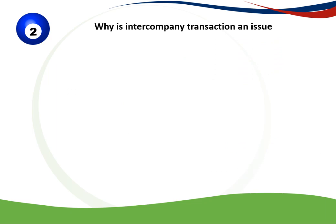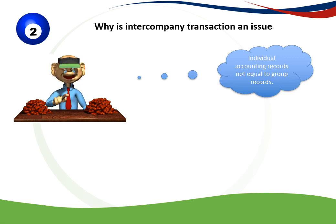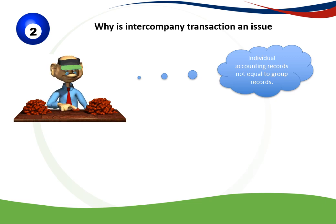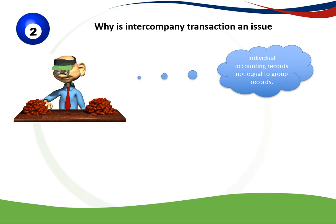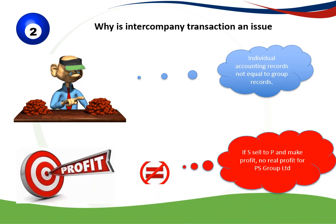Why is the Intercompany Transaction an issue? In the individual books or accounting records of these two entities, you will have no problem if you've accounted correctly for the transactions. But when we look at it from a group perspective, there's an issue — because if S Limited sells to P Limited, when we look at it from a group perspective, there was no real sale to an external party. That's why it is an issue for the group accounting records.